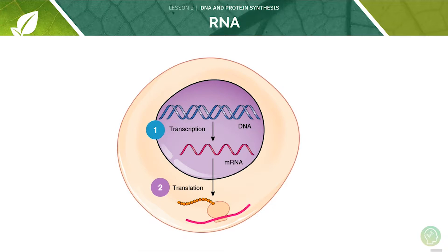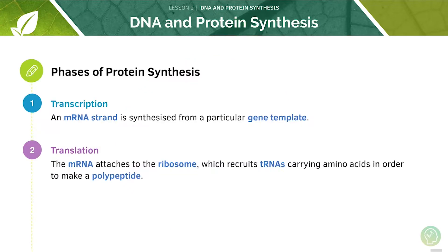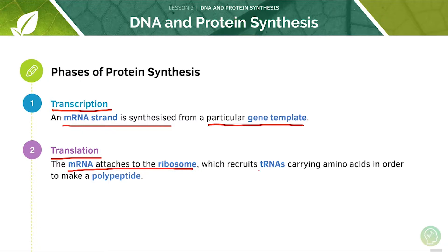During transcription, a strand of mRNA is made — this is a copy of all the codons needed to make a polypeptide. This mRNA diffuses out of the nucleus to the ribosomes. During translation, the mRNA travels to the ribosome and attaches to it, where it makes the final protein. Protein synthesis occurs in two major phases: transcription, where an mRNA strand is synthesized from a particular gene template, and translation, where the mRNA attaches to the ribosome, which recruits tRNAs carrying amino acids to make a polypeptide.